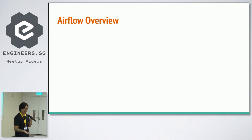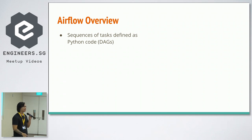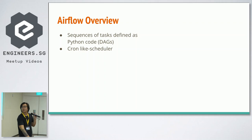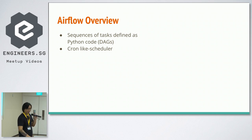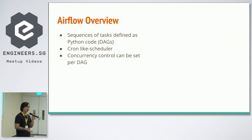What exactly is Airflow? You can define a sequence of tasks as Python code — they call them DAGs, directed acyclic graphs. You can have any kind of tree-like sequence of tasks as long as it doesn't loop back on itself. Things can run in sequence or in parallel. There's a Cron-like scheduler, so since we're familiar with Cron syntax it's not too far removed from what we know. Concurrency controls can be set per DAG — if you only want one instance running at a time, the rest will be queued. This is a huge step up from Cron, which is not aware of currently running tasks.